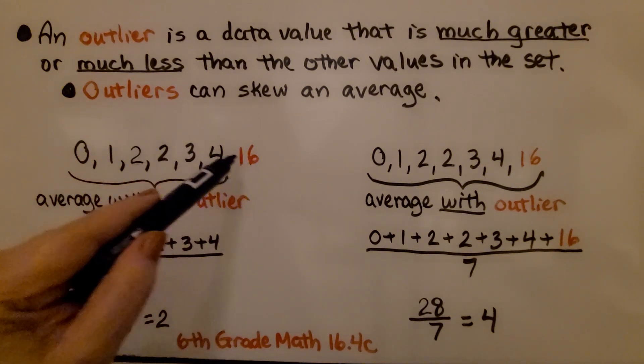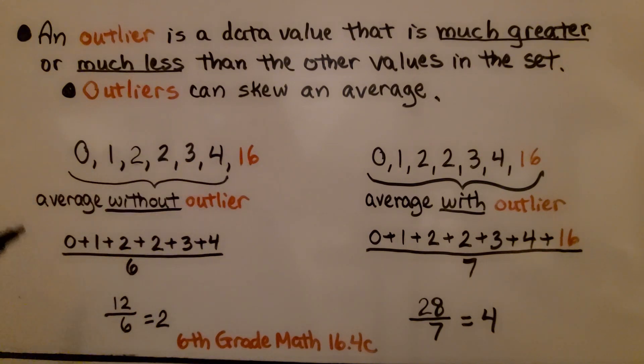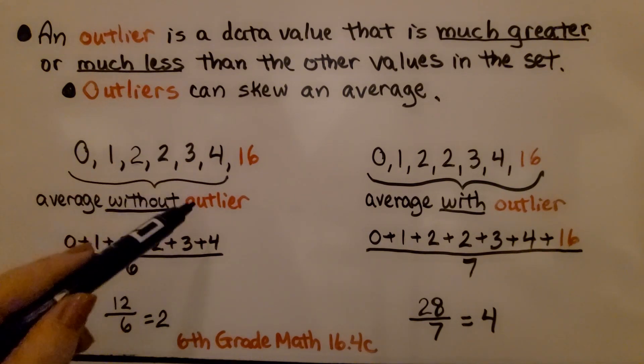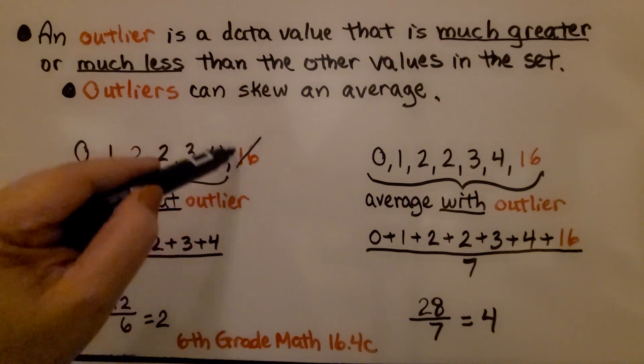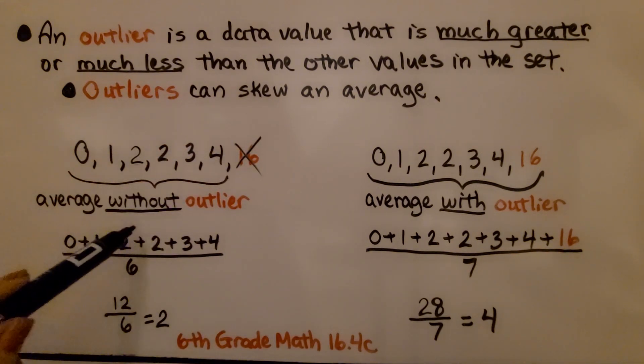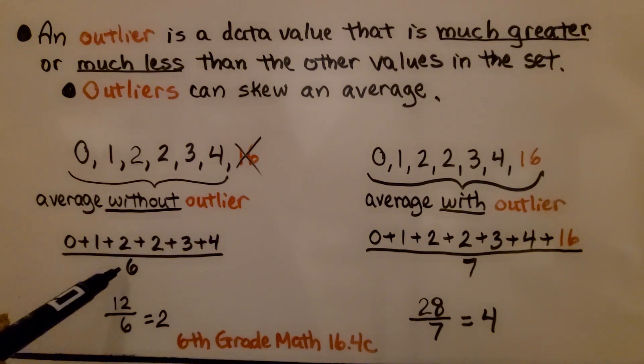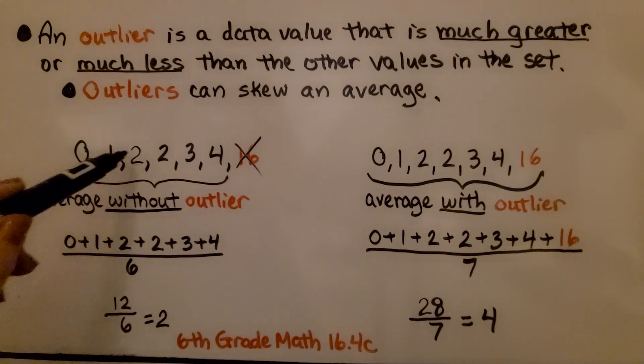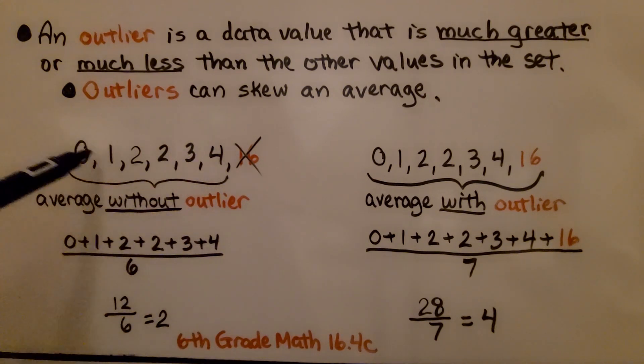If we did the average without the outlier, if we didn't count this, we would get zero plus one plus two plus two plus three plus four divided by six. There are six values that we're adding. That would give us 12 divided by six, which gives us an average of two.